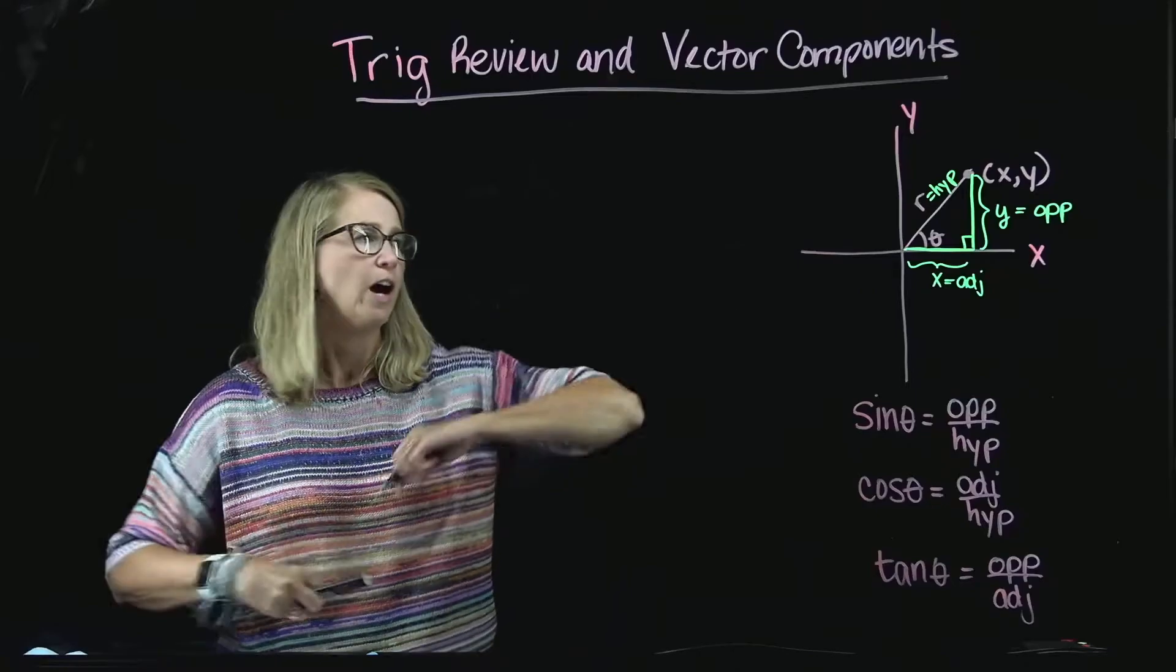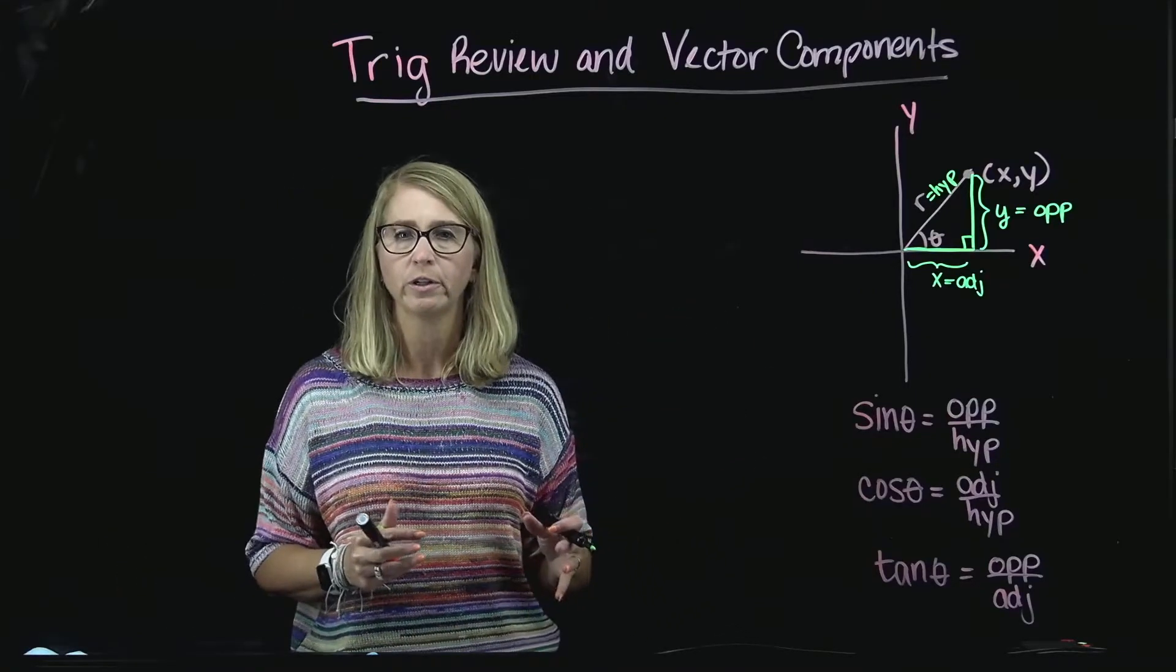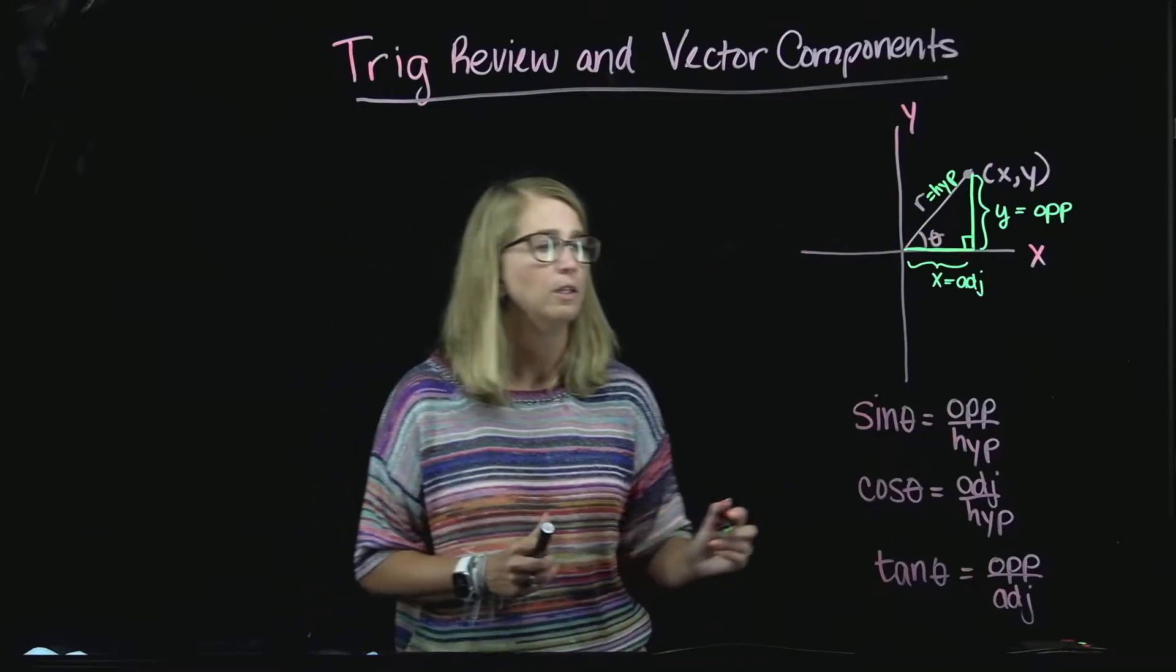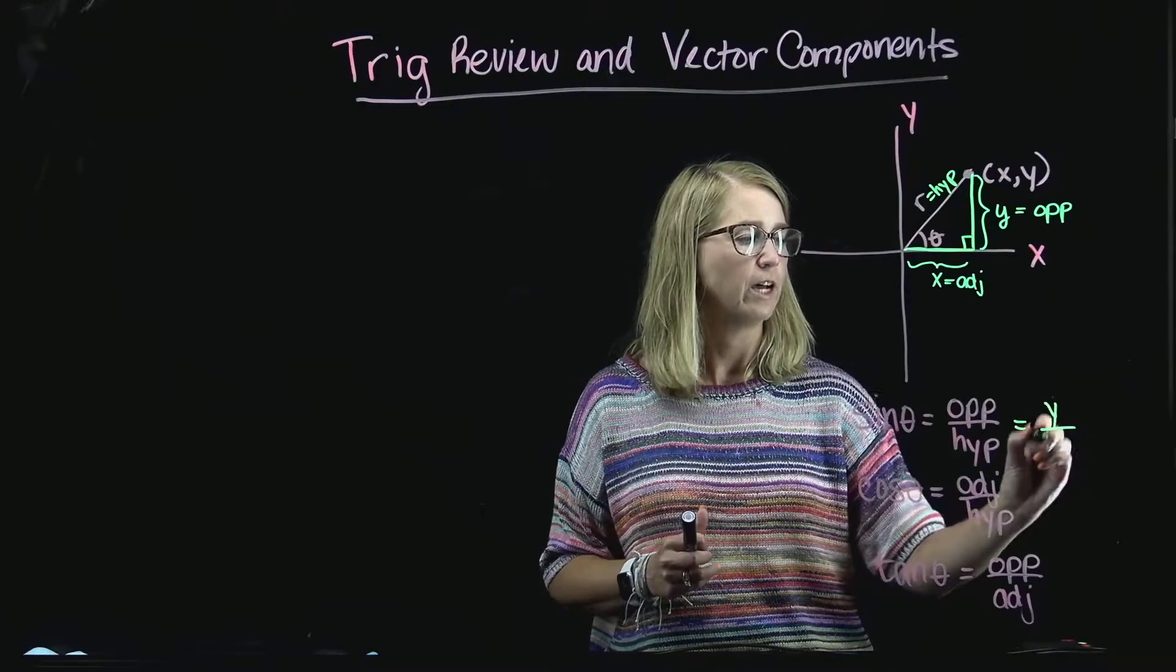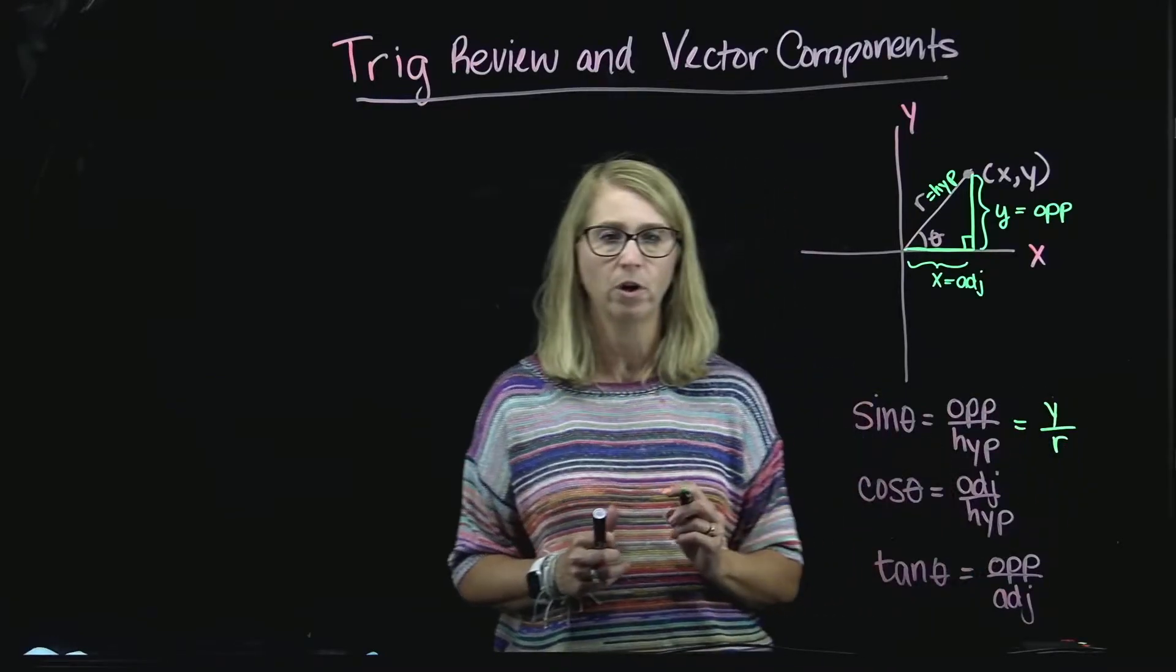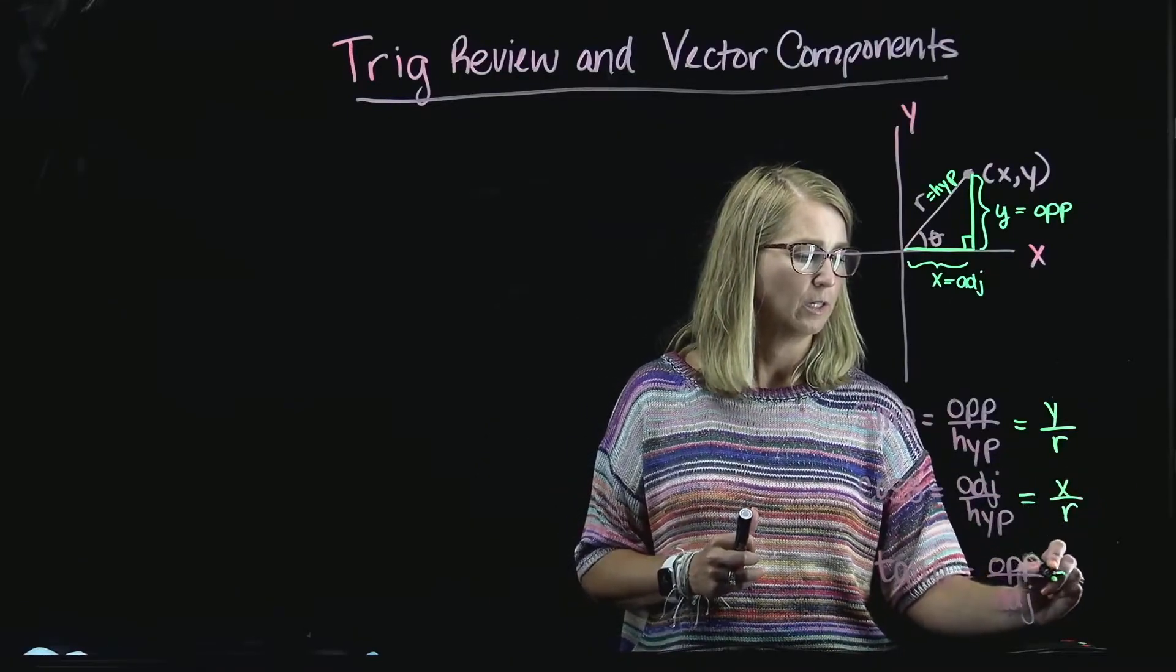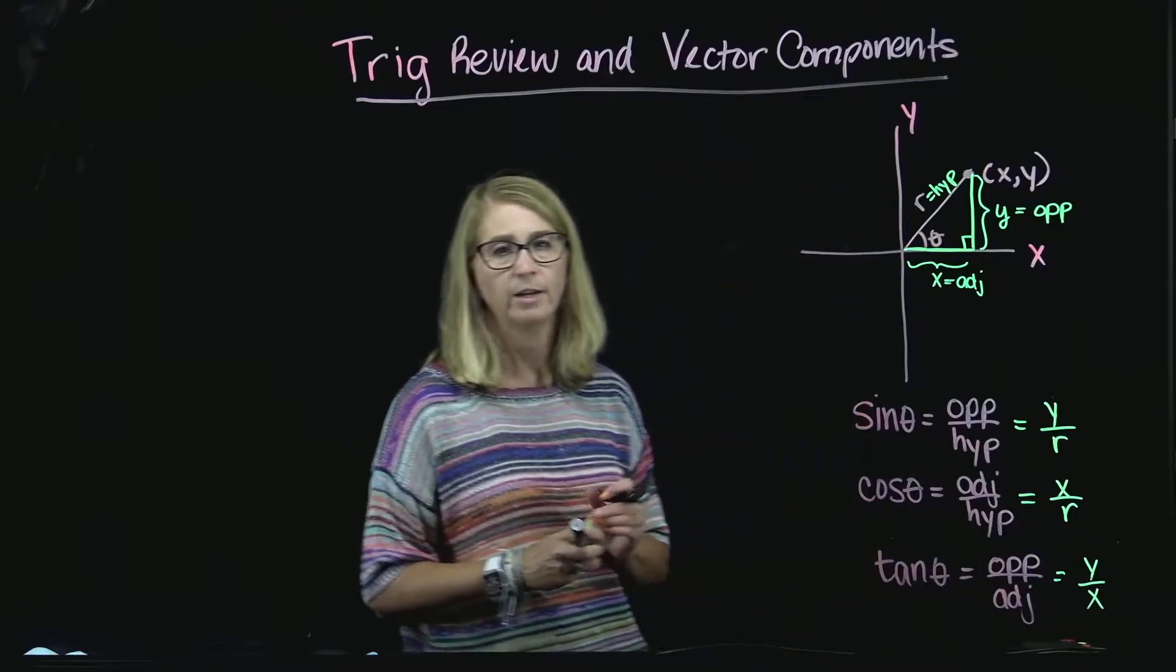Now, if I go in here and I use some of the other labels for these different sides of my triangle, I might want to just call the opposite side the Y value, and the hypotenuse is R. The adjacent side is X, hypotenuse is R. And then the opposite side is Y, and the adjacent side is X.